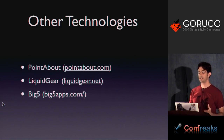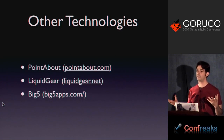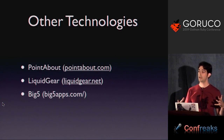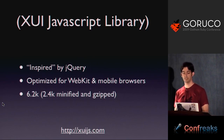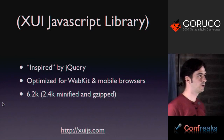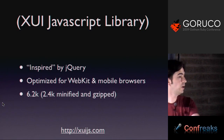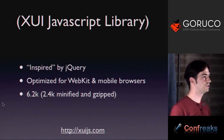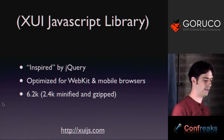A laundry list of other companies doing similar things: Pointabout in D.C., Liquid Gear, Big 5 — other developers with similar ideas, providing springboards and JavaScript interfaces to native phone features. Another parenthetical aside: XUI is a JavaScript library inspired by jQuery. They ripped out all the parts of jQuery that make it browser-independent — no IE6 gunk — and optimized it for mobile. What you're left with is a very small framework: 2.5k when minified and gzipped, geared towards mobile development and optimized for WebKit.